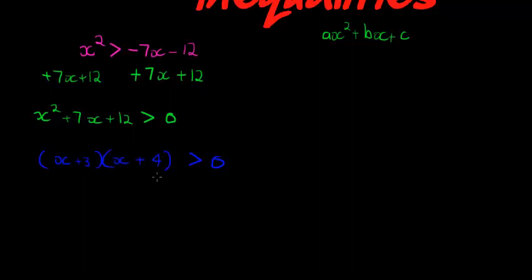This means that if this was an equation, my solutions would have been x = -3 and x = -4 because I want this equal to 0 and that equal to 0. It's not an equation though.